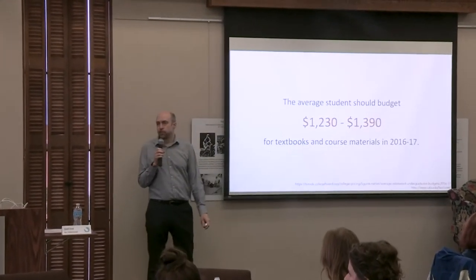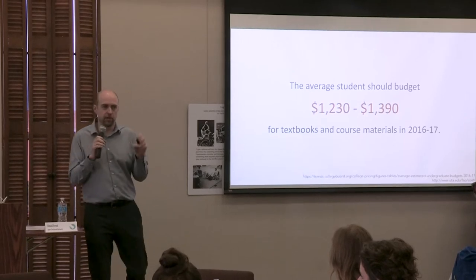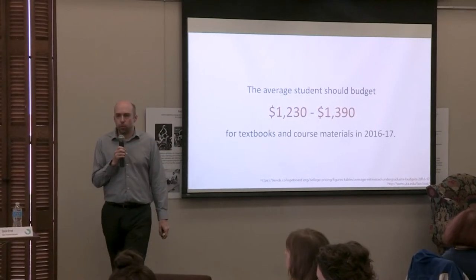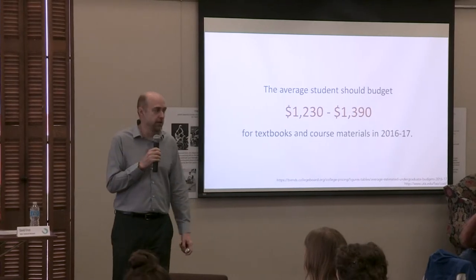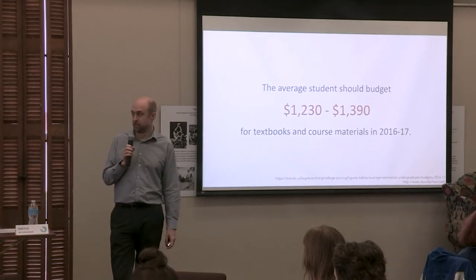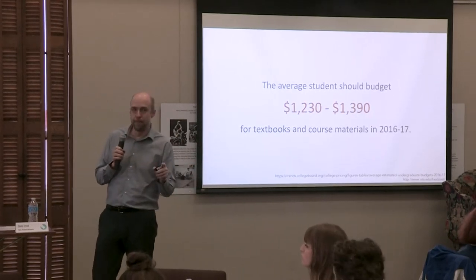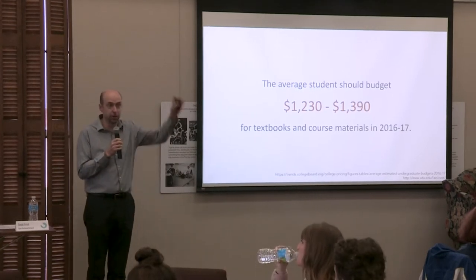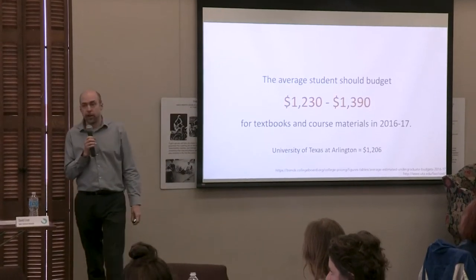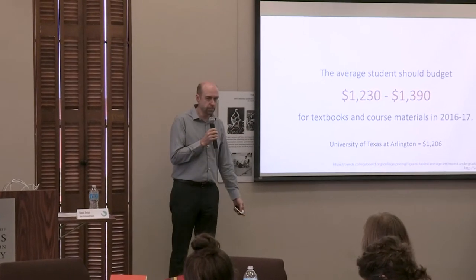The College Board says that students should budget about $1,300 a year for books and supplies — almost completely textbook costs. Studies have shown that students don't actually spend $1,300. Why? They buy used books, trade with others, rent them, or don't buy them at all. Your institution estimates students should budget $1,206 — right in that average.